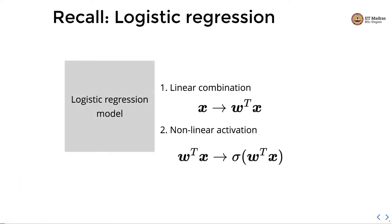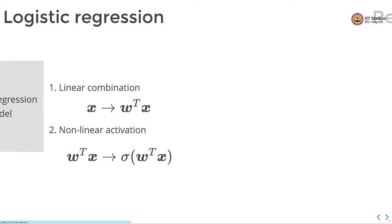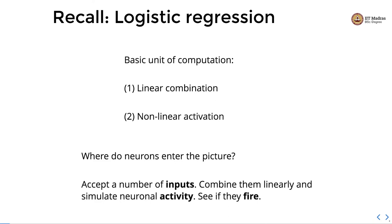Recall the logistic regression model which had two stages. The first stage is linear combination, which is W transpose x, and this output is passed through a nonlinear activation. In case of logistic regression, we use sigmoid nonlinear activation. The sigmoid function crushes a real number between minus infinity and plus infinity to a number between 0 and 1. So the basic unit of computation in logistic regression had two parts: linear combination and nonlinear activation.